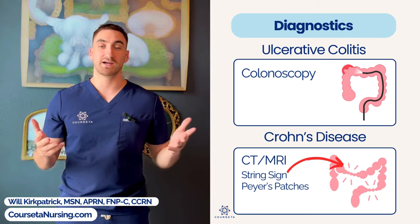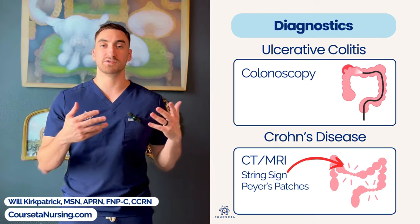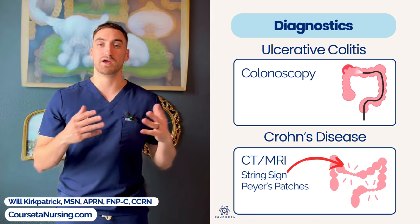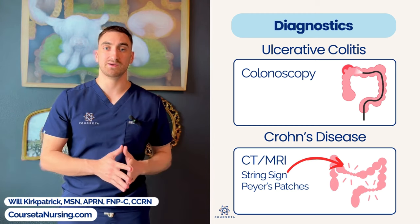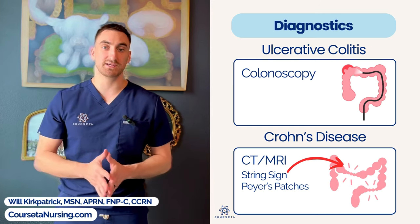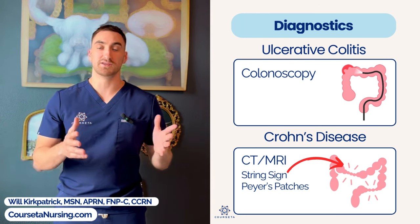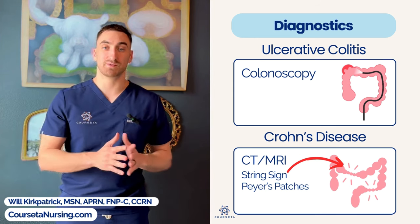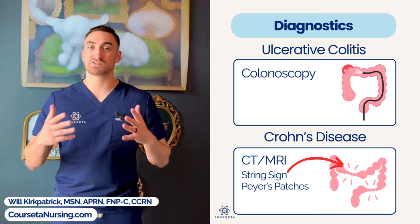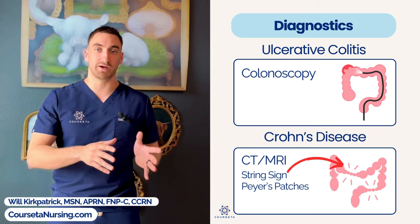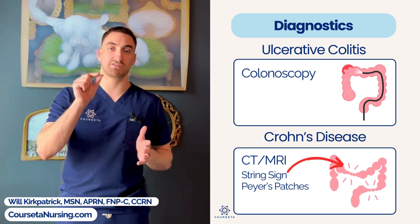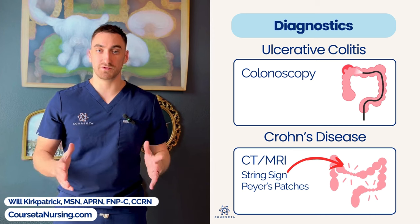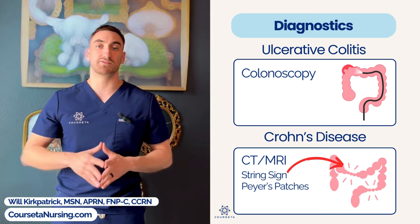For diagnostics, imaging is the primary tool for both conditions. For Crohn's disease, a CT or MRI is used to find the scattered Peyer's patches, which are a hallmark sign. Another key term is the string sign — a thinning of the bowel wall that appears scattered, meaning diseased bowel can sit right next to healthy bowel. For ulcerative colitis, CT and MRI can be used, but a colonoscopy is preferred since it allows direct visualization of the ulcers developing in the colon.